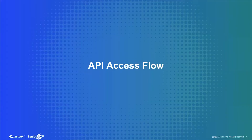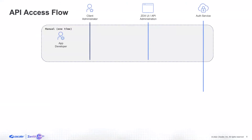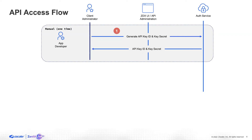Let's look at how our API access flow is structured today. First, you will have a new module available in the ZDX UI called API Administration. What happens here is you need to create an API key ID and a secret. This is generated by the authentication service and once generated, you will be able to access them in the UI itself.